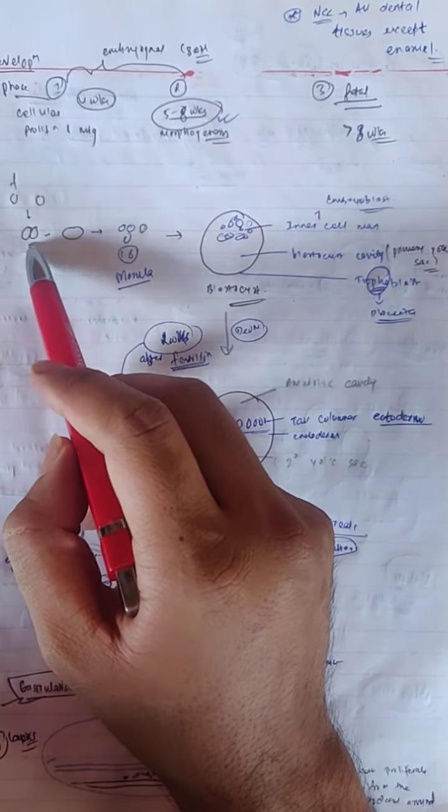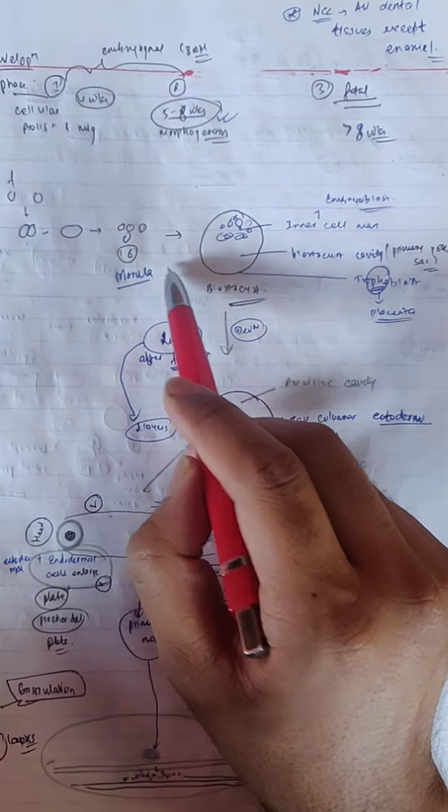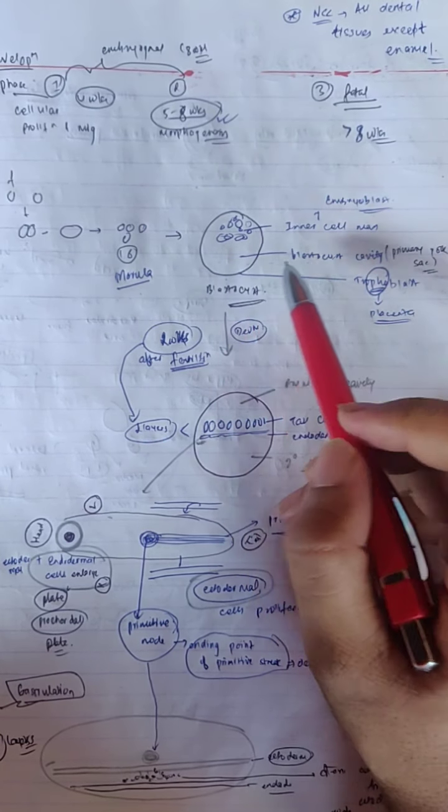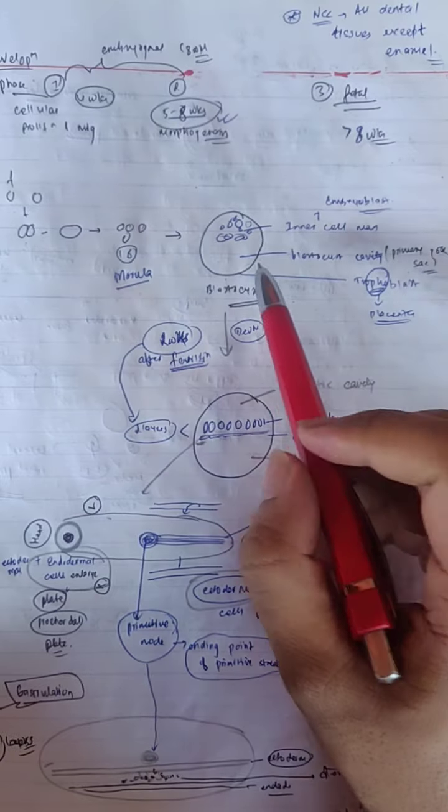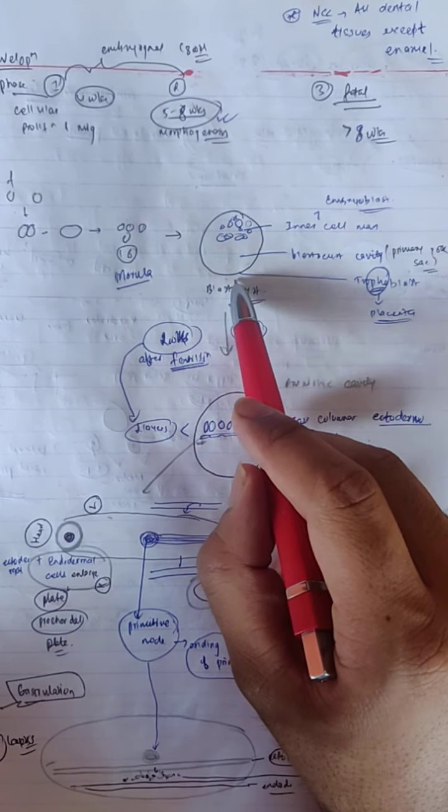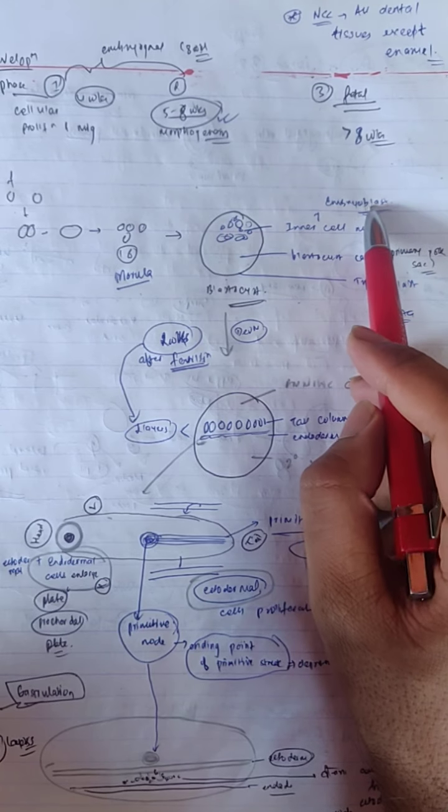Fertilization. One cell into blastocyst, 16-165 cells. Blastocyst has blastocyst cavity and primary yolk sac. It is called inner cell mass and outer cell mass, which is called trophoblast, which forms the placenta. The inner cell mass is called embryoblast.